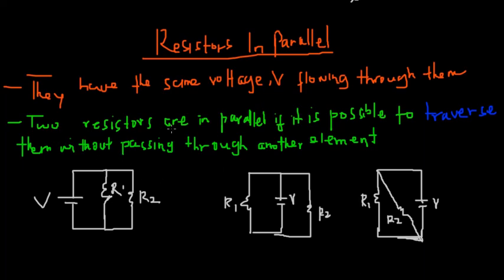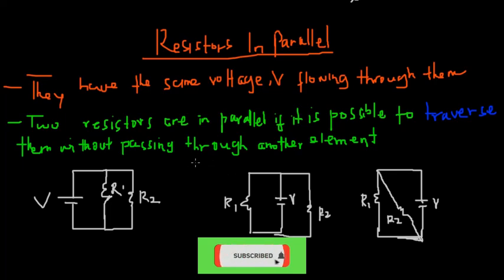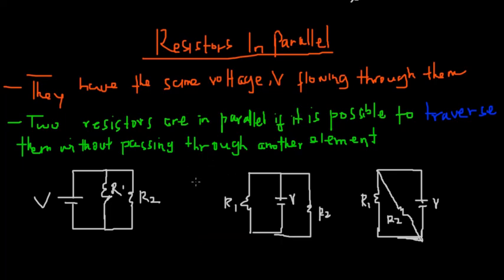Whenever you see two resistors and you are able to traverse through them without passing through another element, it means they are in parallel. These other elements could be voltage sources or other resistors. Two resistors are in parallel if it is possible to traverse between them without passing through another element — another voltage source or another resistor.